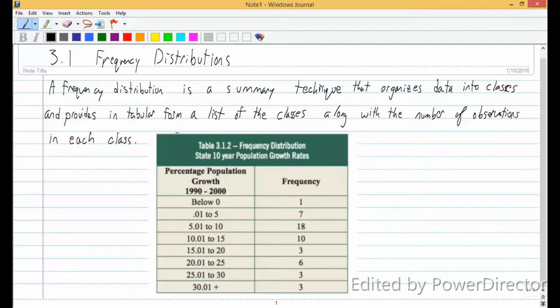And then this would be the percentage population growth between these two, I guess, in 10 years. And so it's not just one state, it's all states. And then it tells you how many are in this class. These are classes.